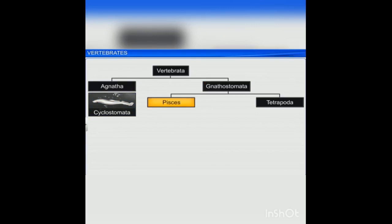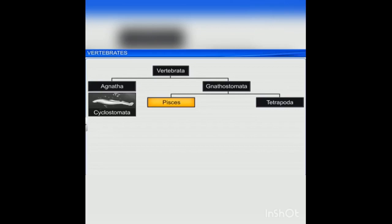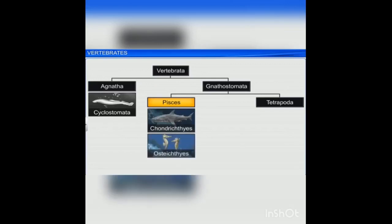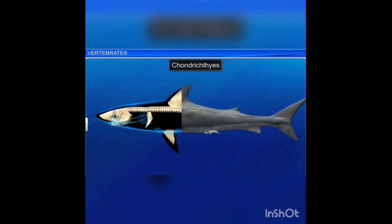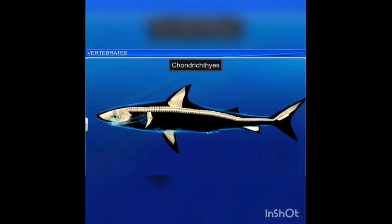Fishes include cartilaginous fishes and bony fishes. First, cartilaginous fishes — called Chondrichthyes. 'Chondros' means cartilage, 'ichthyes' means fishes. The notochord is persistent throughout the life in these cartilaginous fishes.